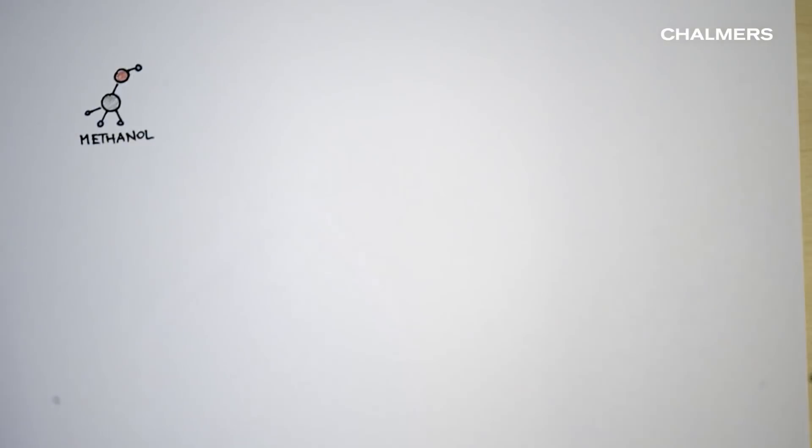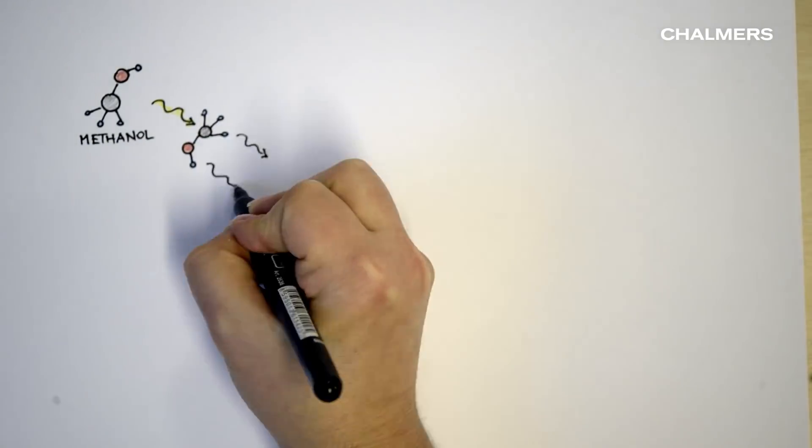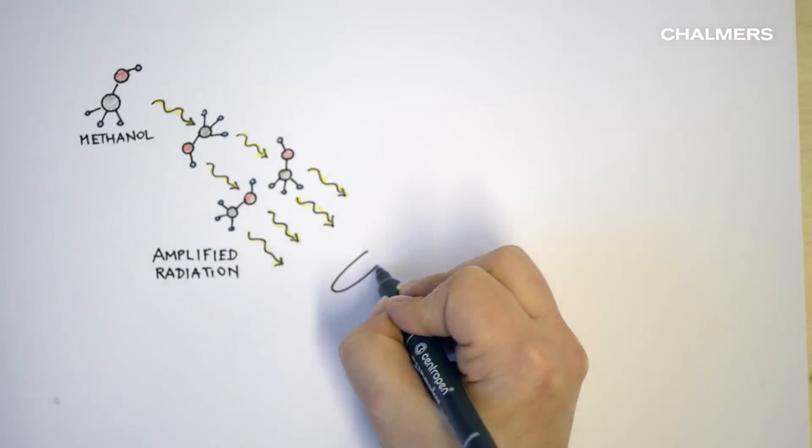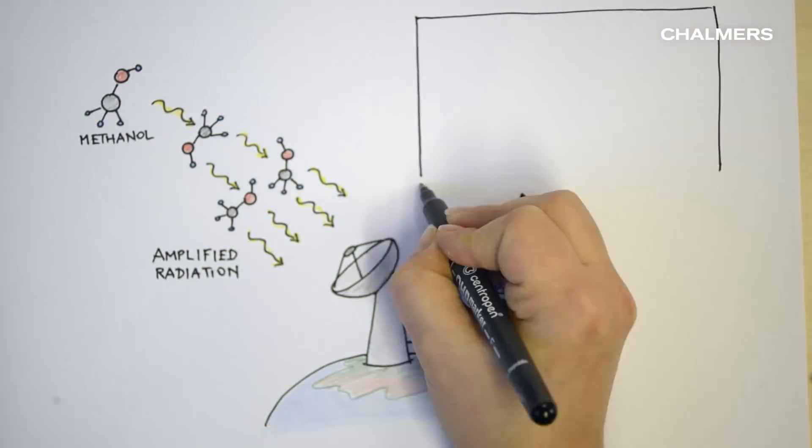Masers naturally amplify radiation a thousand to a million fold. They consist of molecules, in our case methanol, and what we see is an extremely bright signal.